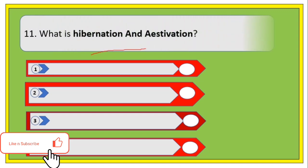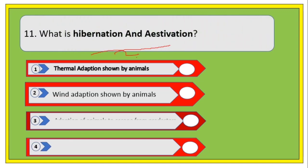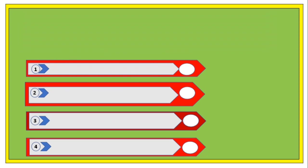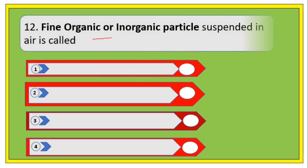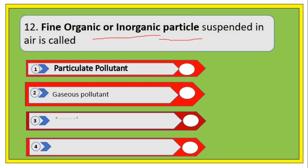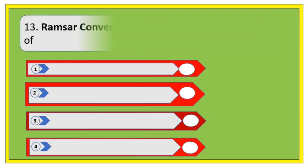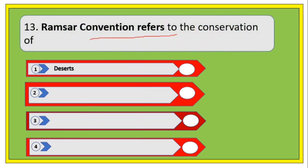Next question: what is hibernation and aestivation? The right answer is thermal adaptation shown by animals. Next question: fine organic or inorganic particles suspended in air are called — the right answer is aerosols.